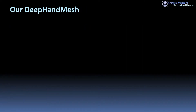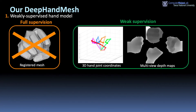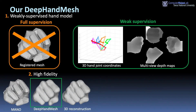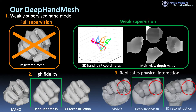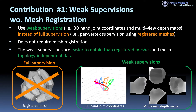To resolve those issues, we propose deep-hand mesh. Our deep-hand mesh is trained in a weakly supervised way, and therefore does not require mesh registration. Second, its fidelity is high. Third, it can replicate physical interaction between hand parts. We use weak supervision such as 3D joint coordinates and multiple depth maps instead of full supervision with registered meshes.